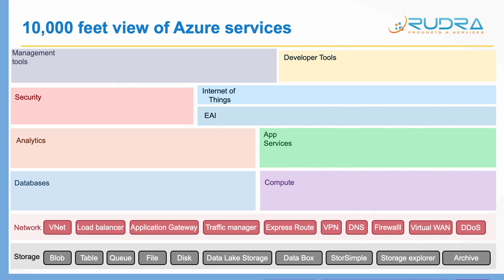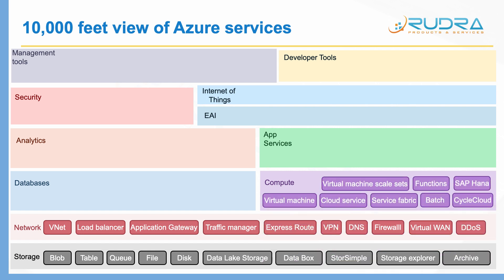And in Compute, you have Virtual Machine — you can deploy virtual machines in Azure. And you have Cloud Service and Service Fabric, both are PaaS services. And you have Virtual Machine Scale Sets, which are basically used if you want to deploy thousands of identical machines. And you can use Batch if you want to schedule a batch job in the cloud. And you can use Functions — Functions are based on serverless architecture, whereby you will not purchase any underlying compute power.